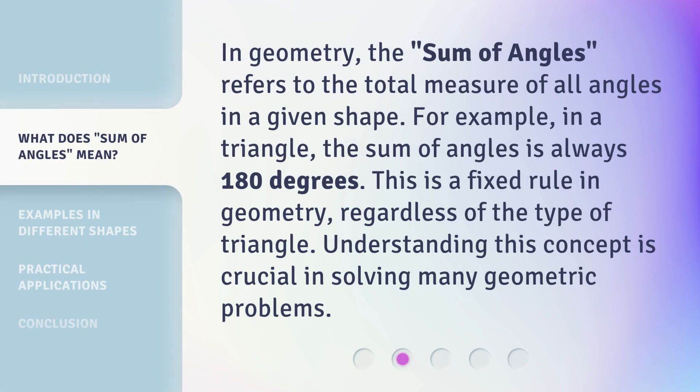In geometry, the sum of angles refers to the total measure of all angles in a given shape. For example, in a triangle, the sum of angles is always 180 degrees. This is a fixed rule in geometry, regardless of the type of triangle. Understanding this concept is crucial in solving many geometric problems.